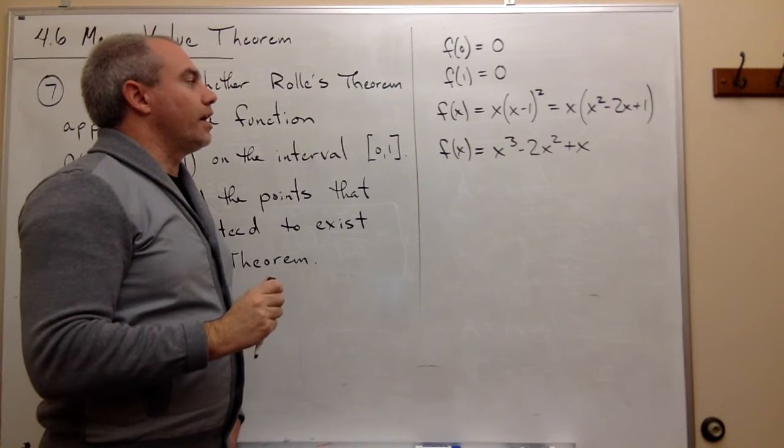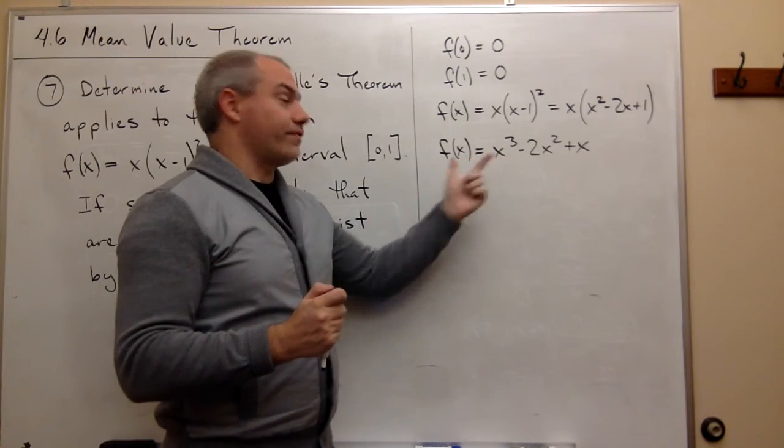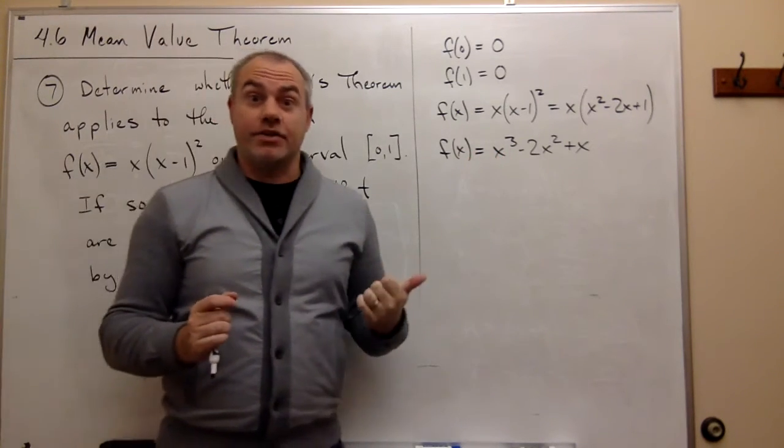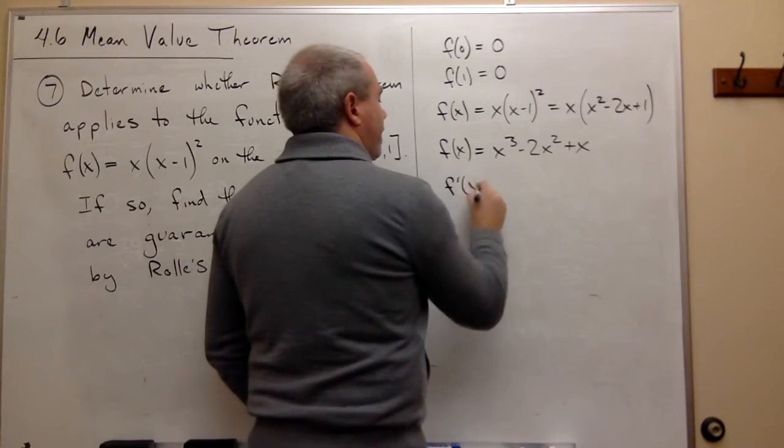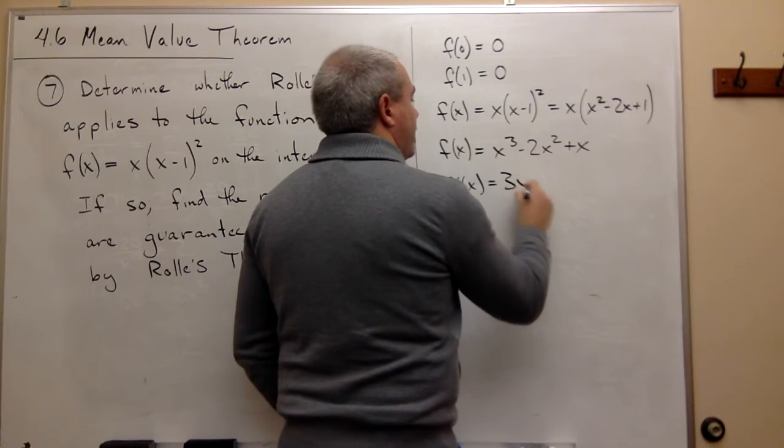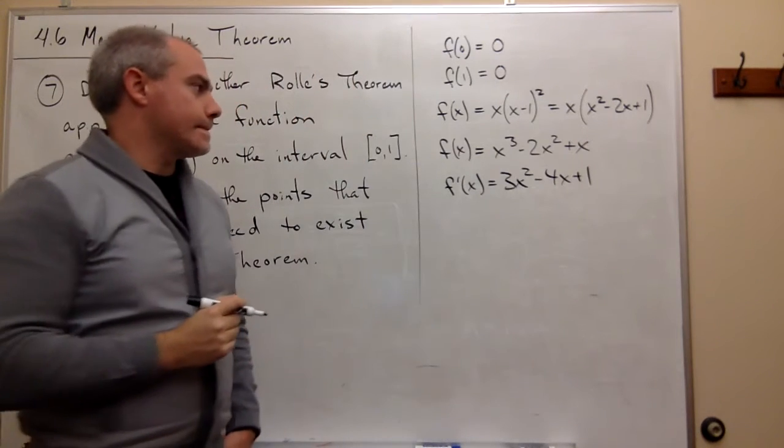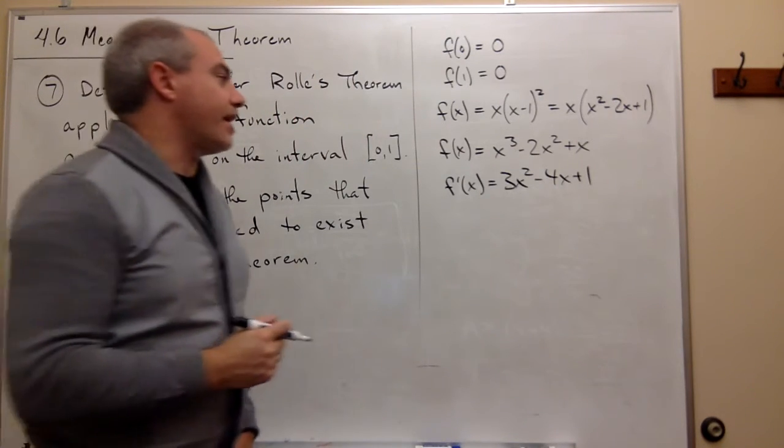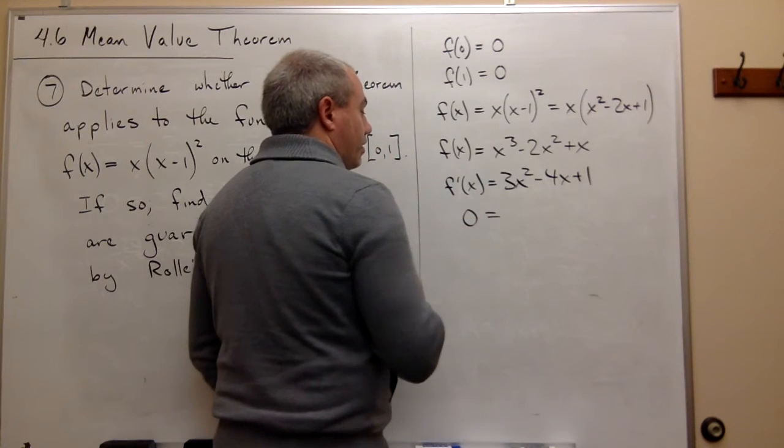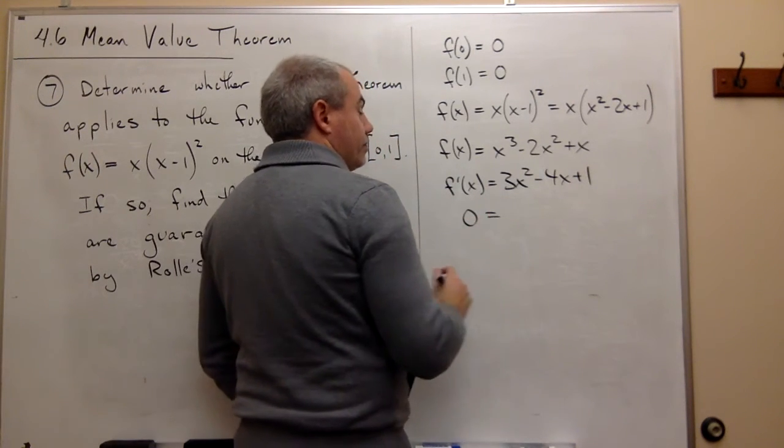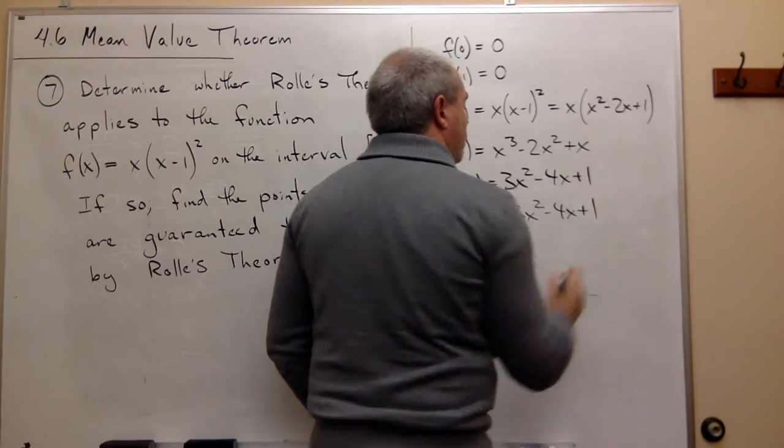And the question is, where is the derivative of this function equal to 0? So let's take its derivative, set it equal to 0, and see. So I take its derivative, and I get f'(x) is equal to 3x² - 4x + 1. And then I'm going to set that equal to 0 to see what the point is given to us by Rolle's theorem. So this is 3x² - 4x + 1.